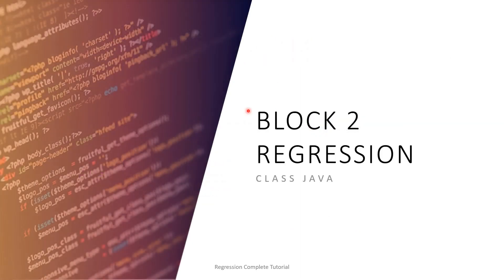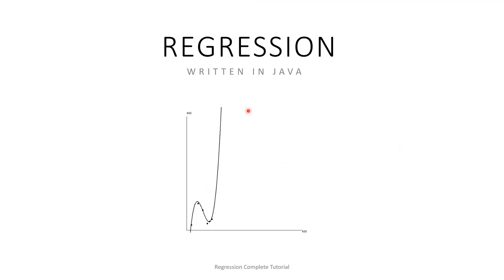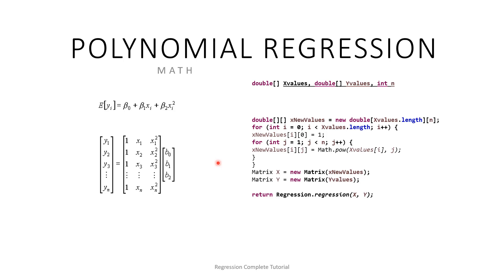Now we can go further into the regression topic. I have created the regression in Java with a window for visualizing the function. For example, this shows a degree-3 polynomial with the dataset points and the fitted function. We want to find the equation coefficients given the x and y datasets, depending on the polynomial degree.